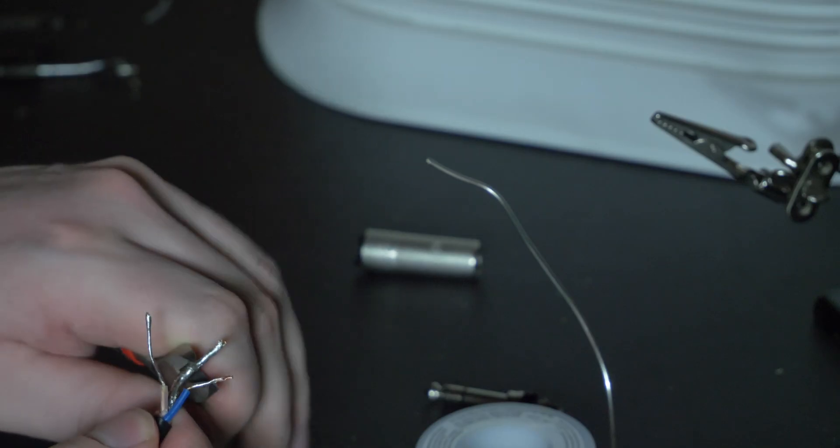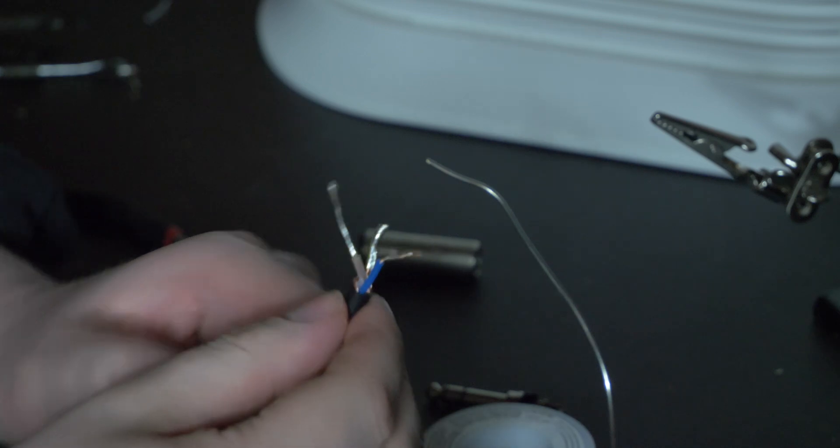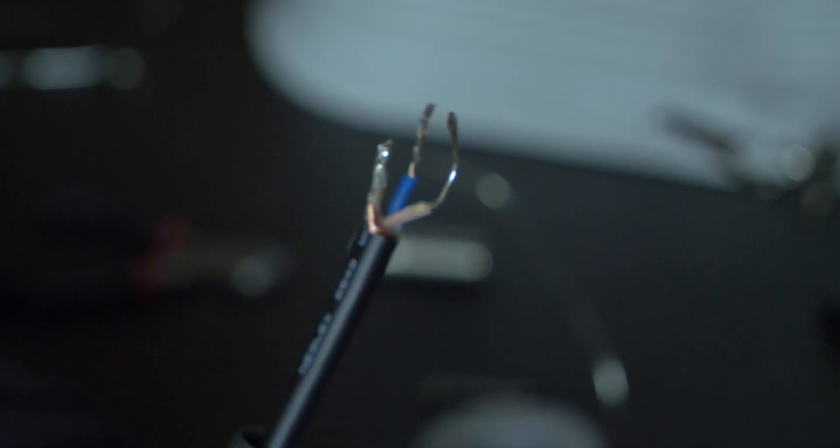The ground will be the shortest piece, so it's not getting in the way of the core contacts. And you'll want to trim this after it's been tinned, so you don't release a bunch of rogue copper wires all over the place. The hot wire will also be noticeably shorter to fit inside the center of the core contact. The neutral wire can be longer than the other two.